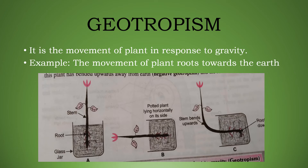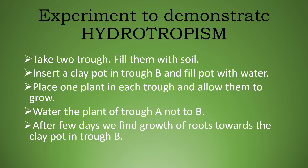Geotropism — 'geo' means gravity. The response of a plant part towards gravity is called geotropism. The roots grow towards gravity. In the experiment shown in the diagram, if we keep a planted pot horizontal, after a few days the stem starts growing upward towards light while the roots grow towards gravity. This diagram demonstrates both phototropism and geotropism.